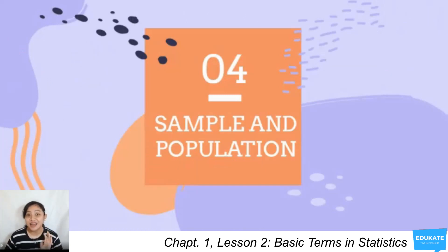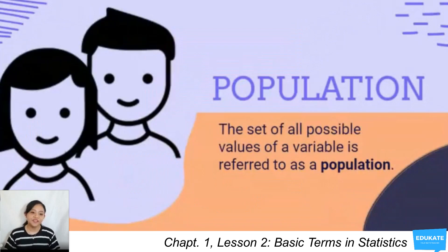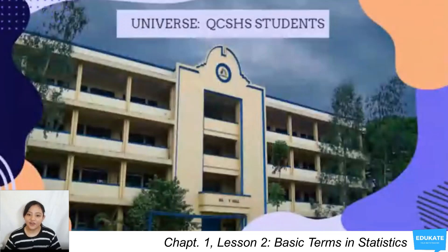Now let's move on to the last basic term in statistics, which is sample and population. Population, this is the set of all possible values of a variable. For example, what are the possible values for the sex of a respondent? If our universe is humans, what are the possible values for the sex of a respondent? It can only be male or female.